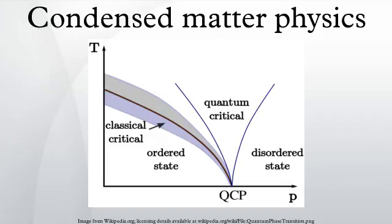Leo Kadanoff, Benjamin Widom and Michael Fisher developed the ideas of critical exponents and scaling. These ideas were unified by Kenneth Wilson in 1972, under the formalism of the Renormalization Group in the context of quantum field theory.